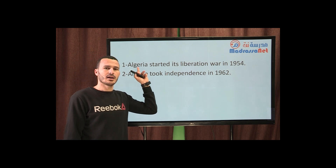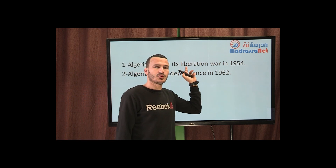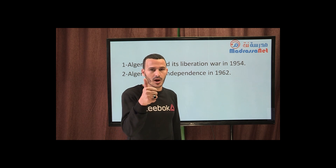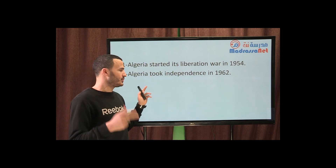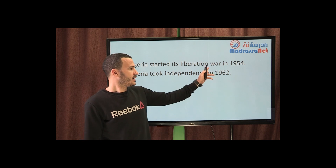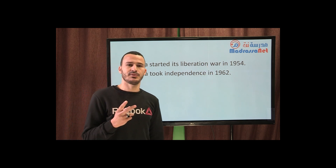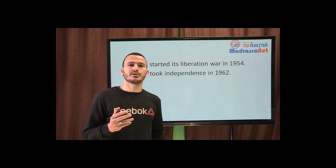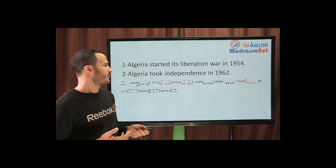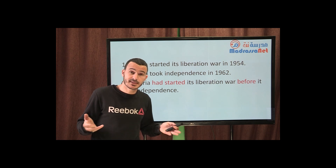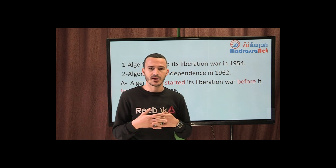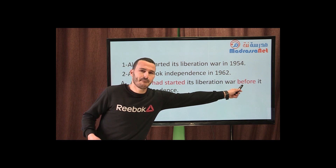We have two events: Event number one — Algeria started its liberation war in 1954. Event number two — Algeria took independence in 1962. I want to combine these two sentences into one. I need to make the necessary changes and add a conjunction to link them together. The conjunction is 'before'.